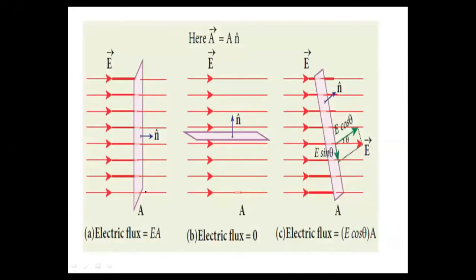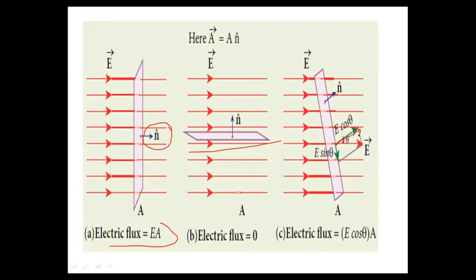The electric field and area are perpendicular to each other, so the electric flux is E·A. The unit vector represents direction. In the second diagram, the electric field lines and area are both parallel. In that case, the electric flux is zero — E dot A with cos 90° equals zero. If the field makes some angle theta, then phi = E·cosθ·A. When area and field are parallel, the flux is zero; when perpendicular or normal to the field, the flux is maximum.